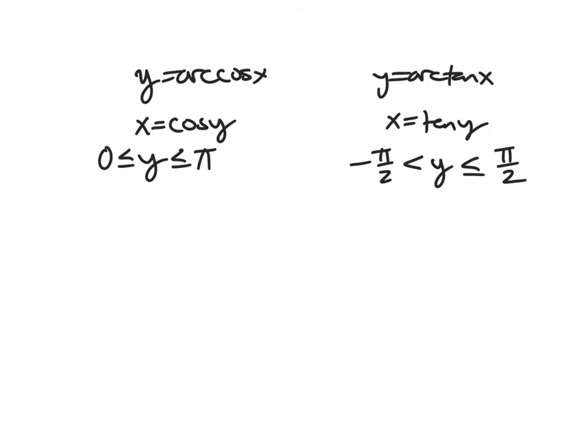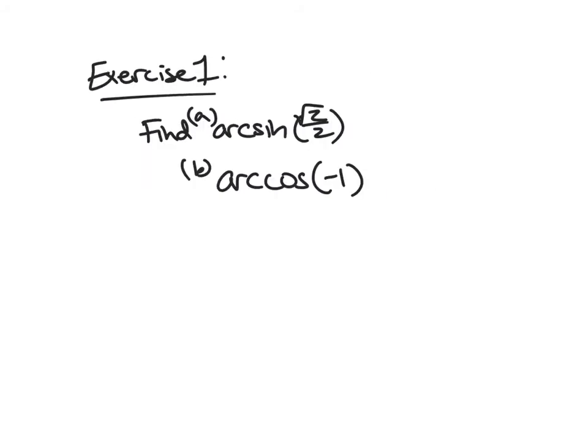And then those vertical asymptotes become horizontal asymptotes when you look at the inverse, arc tan, because you're flipping your x and y coordinates, essentially. So for your first exercise, I want you to just practice with some of these. So find arc sine of root 2 over 2 and arc cosine of negative 1. And remember to make sure you're within the bounds provided there.